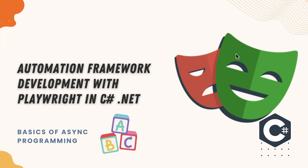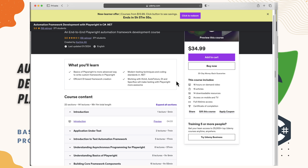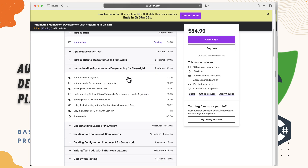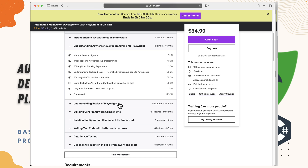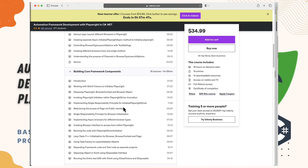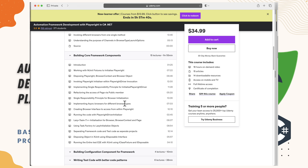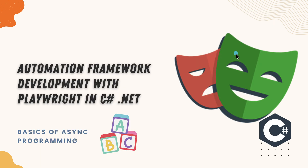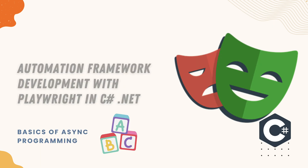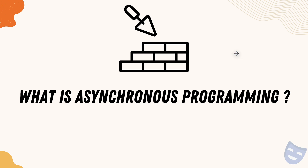Welcome to the crash course on basics of asynchronous programming for Playwright with C#.NET framework development. This video is part of a greater course available on Udemy on automation framework development with Playwright in C#.NET. This section has been released as a free course on YouTube so you can learn how important asynchronous programming is for Playwright in C#.NET coding. Asynchronous programming is the foundation of Playwright code development, and Playwright itself is an asynchronous library.